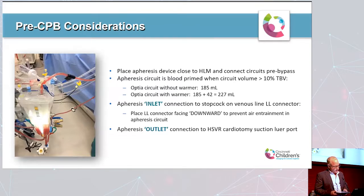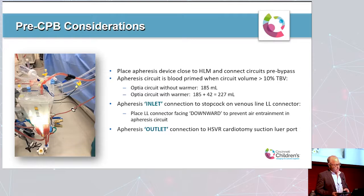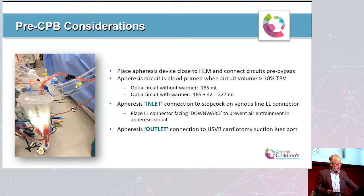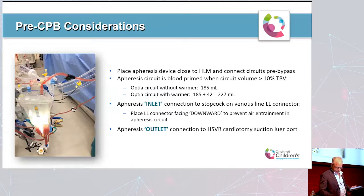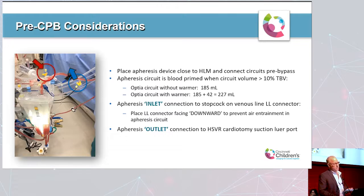For pre-bypass considerations, we place the apheresis device close enough to the heart-lung machine to connect the circuits. The apheresis circuit is blood-primed when the circuit volume is greater than 10% of the patient's total blood volume. With the Optia, the circuit volume is about 185 cc without a warmer; with a heat exchanger it adds 42 mL for a total prime of about 227 mL. The inlet connection to the apheresis device is a stopcock on a Luer connector on the venous line; the outlet returns to a Luer port on top of the hard-shell venous reservoir.